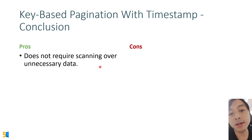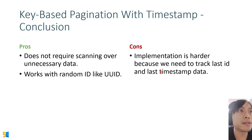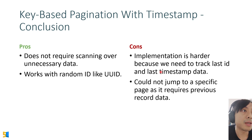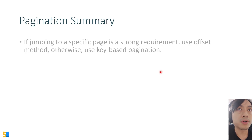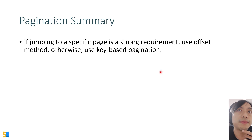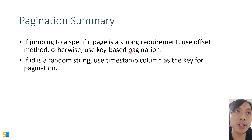The pros of timestamp-based key pagination are that it doesn't require scanning over unnecessary data and it works with random IDs like UUID. The cons are that implementation is harder — we need to track both last ID and the last timestamp — and we still cannot jump to a specific page. In summary: use offset if jumping to a specific page is a strong requirement; otherwise use key-based pagination. If the ID is a random string, use a timestamp column as the key.